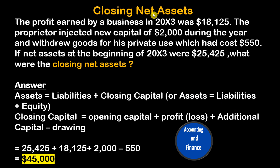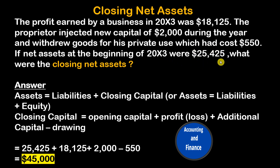Closing Net Assets: The profit earned by a business in 20x3 was $18,125. The proprietor injected new capital of $2,000 during the year and withdrew goods for his private use which had cost $550. If Net Assets at the beginning of 20x3 were $25,425, what were the Closing Net Assets?